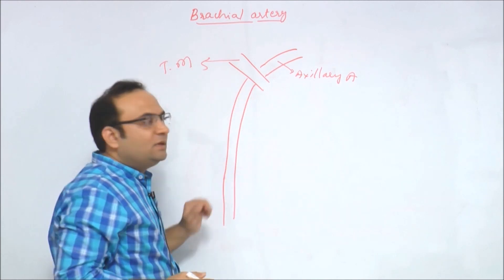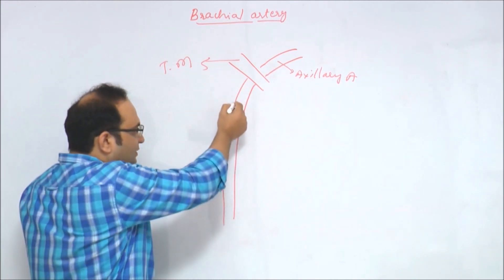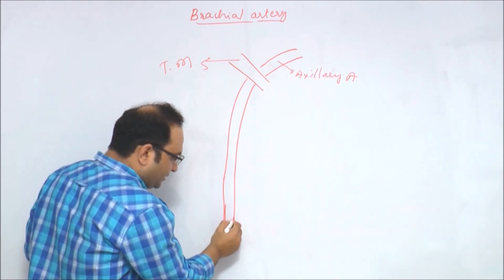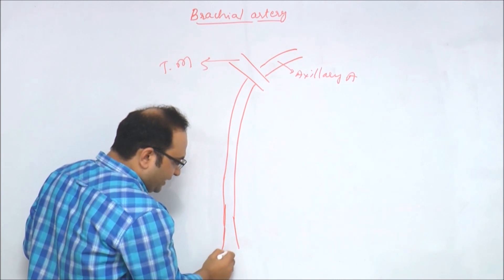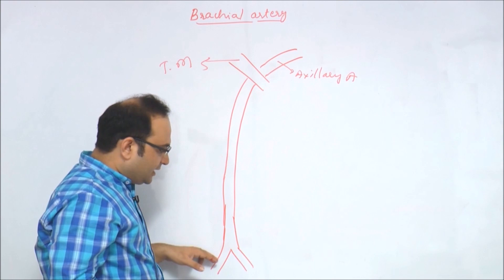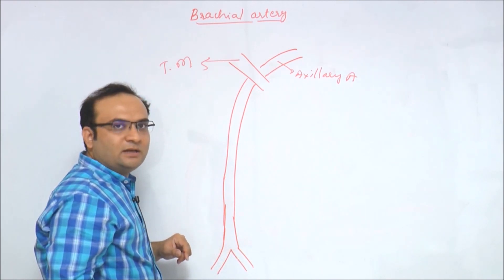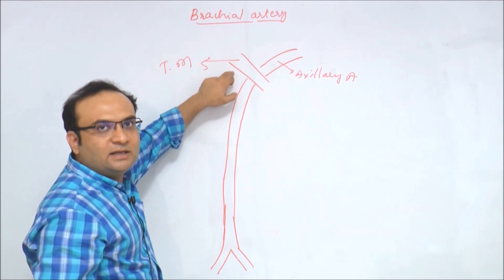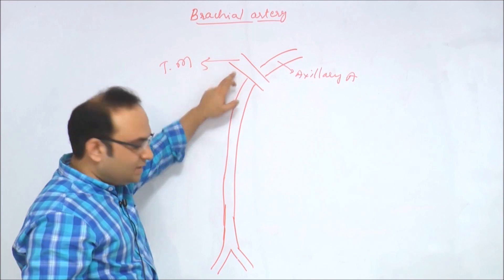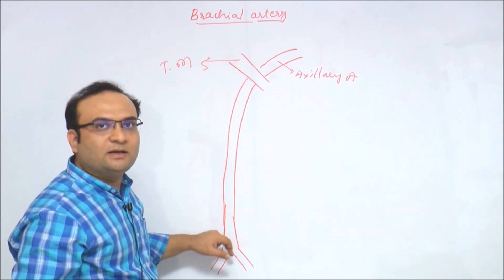In the upper part of the arm, the brachial artery is present on the medial side. As it moves downwards, it comes to the front of the elbow, and terminally it ends by dividing into two arteries at the neck of the radius — the radial artery and ulnar artery, which are the two terminal branches of the brachial artery.